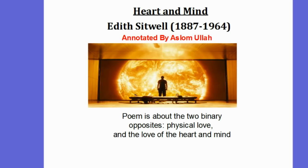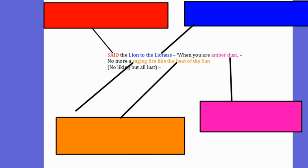The poem Heart and Mind by Edith Setwell is about the two binary opposites of love. These are physical love and the love of the heart and mind. The poem opens with the lines,